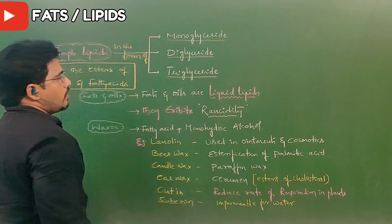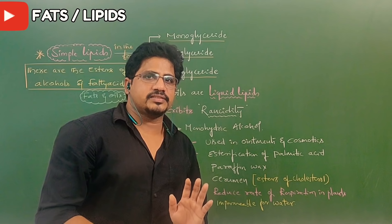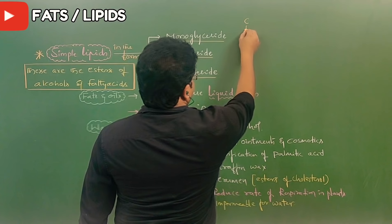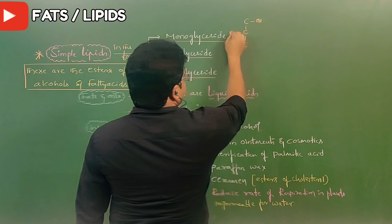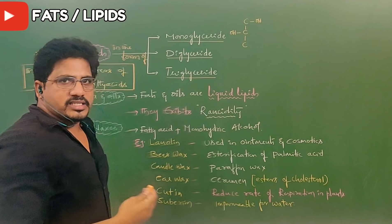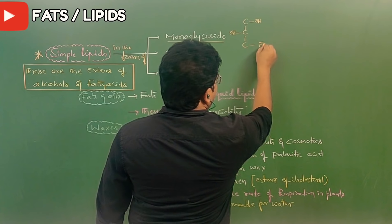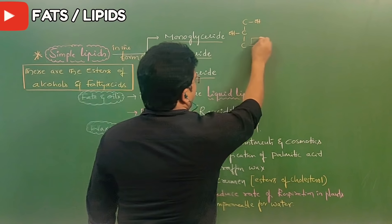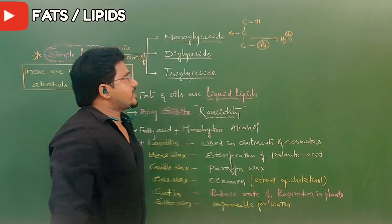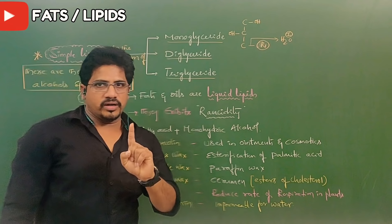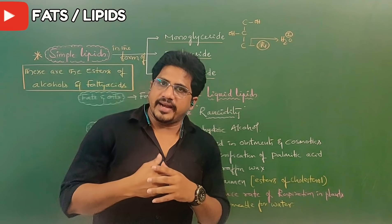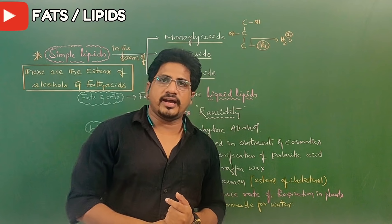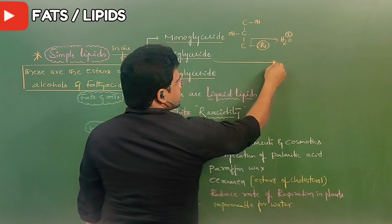What is a monoglyceride? Glycerol is a three-carbon component. In monoglyceride, two carbons are not engaged with fatty acids — only one fatty acid is attached. So only one water molecule is released, meaning only a single dehydration takes place in the formation of one ester bond between the alcohol and the fatty acid.